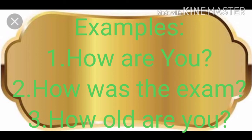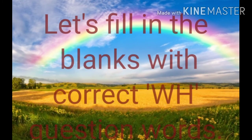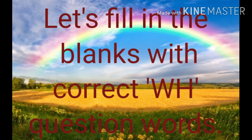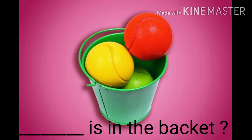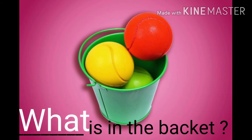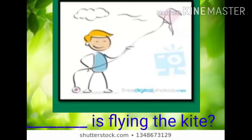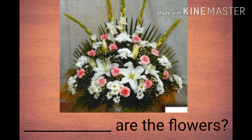I hope students, you have understood where to use and how to use these question words. Now we shall have some exercise. Let's fill in the blanks with the correct WH question words. First: Dash is in the basket. — Answer: What is in the basket? Second: Dash is flying the kite. — Answer: Who is flying the kite?